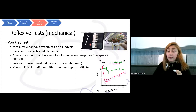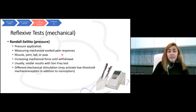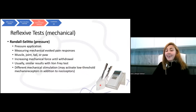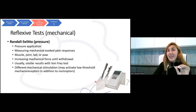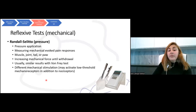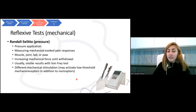These are the von Frey filaments, and here is one example of a graph from published papers showing hypersensitivity. The other mechanical reflexive test is the Randall-Selitto test. The animal is tested by application of increasing pressure and it measures mechanical evoked pain responses. It can be used for almost any tissue — muscle, joint, tail, or paw. The results are usually similar to the von Frey test, but the different mechanical stimulation means it may activate low-threshold mechanoreceptors in addition to nociceptors.